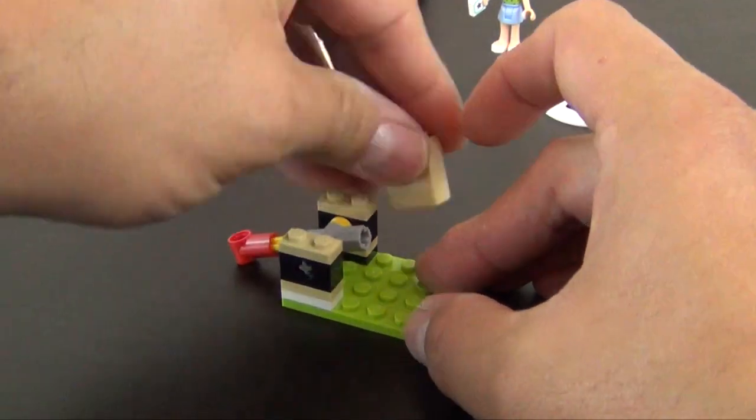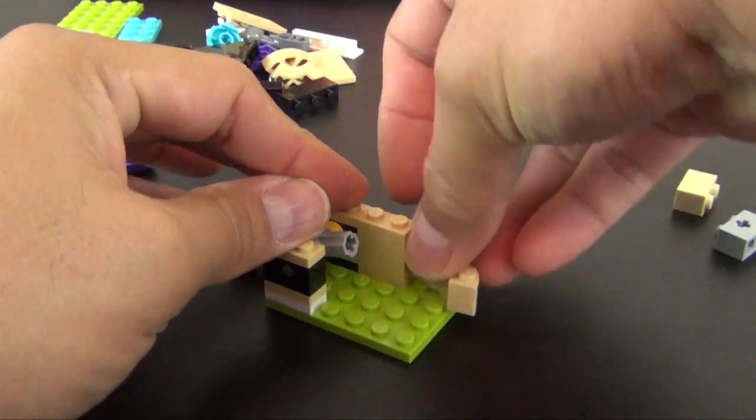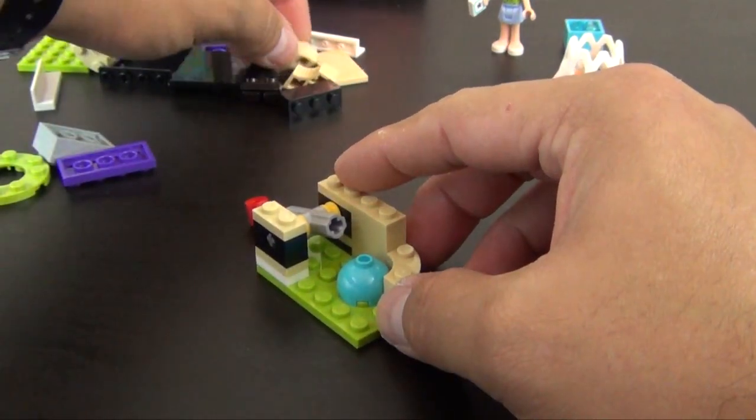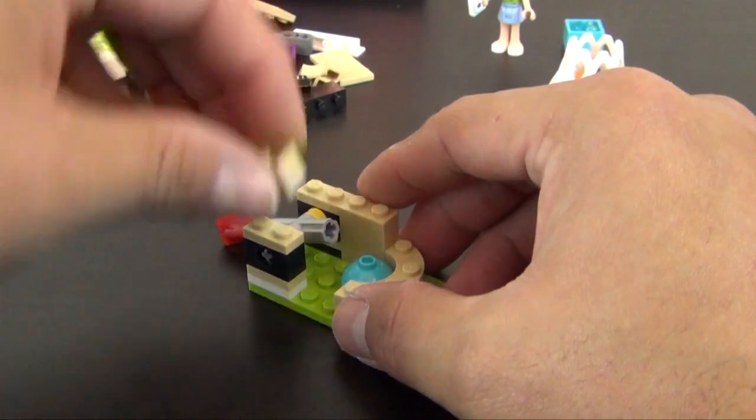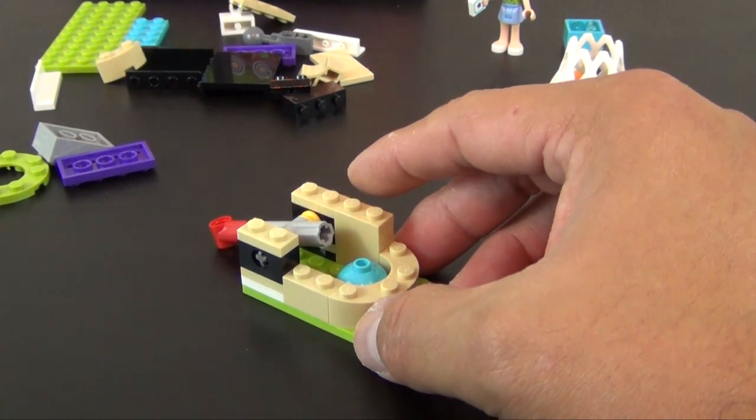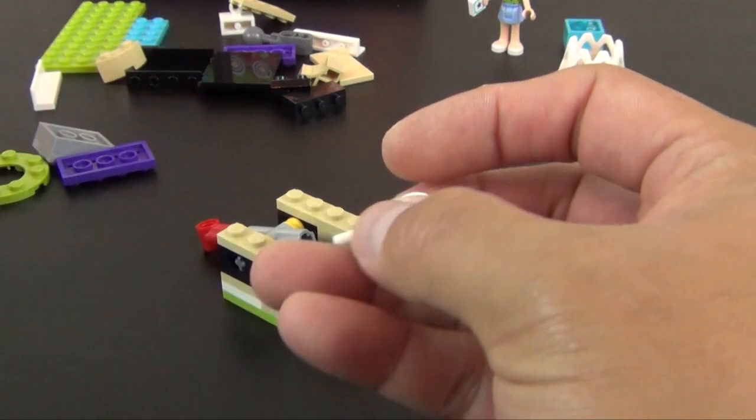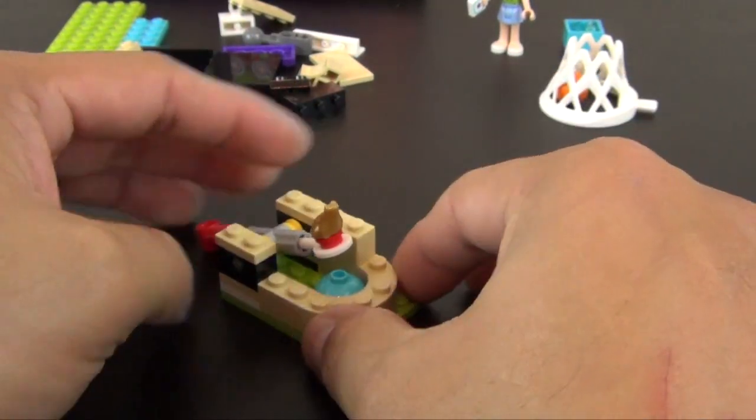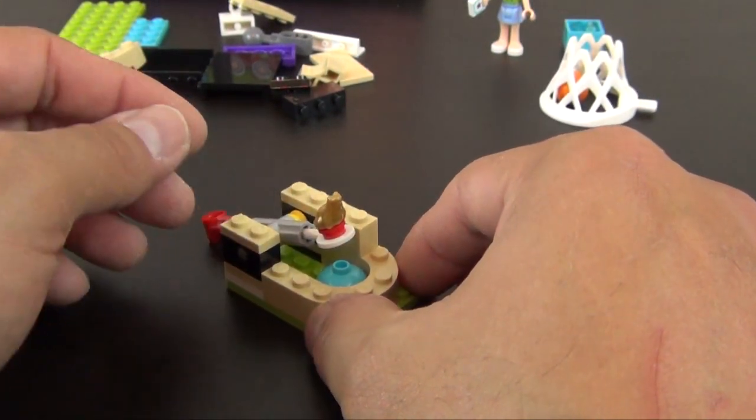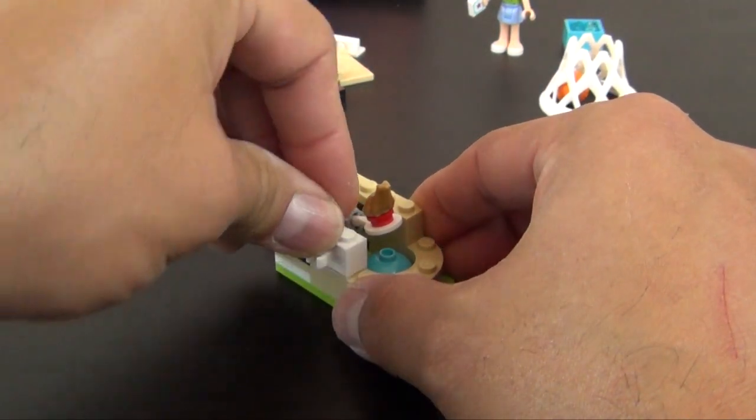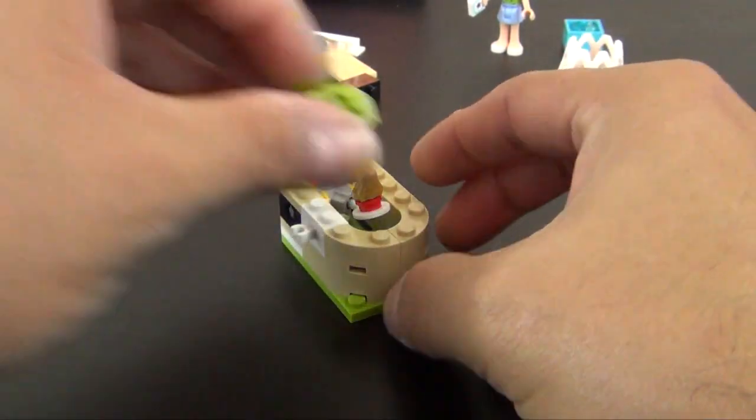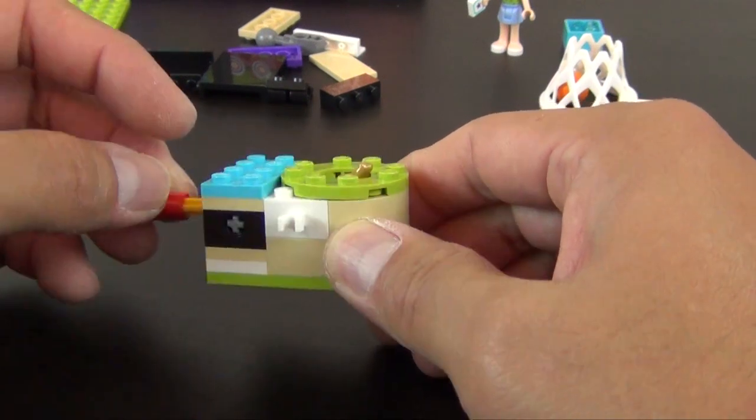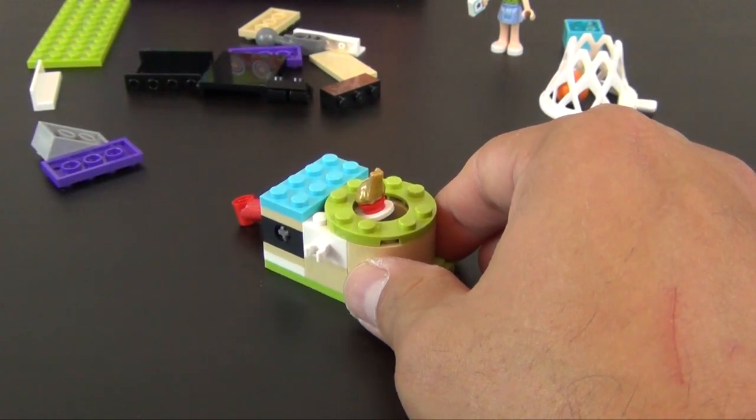A couple more plates, a tall tan brick, a curved macaroni style brick, and then our dome shape. I have a paddle with a red stud and a golden frog to go there. So that's kind of our go up and down thing. You can see how that frog kind of goes down and pops up and goes down. So when it pops up, you're supposed to whack it.